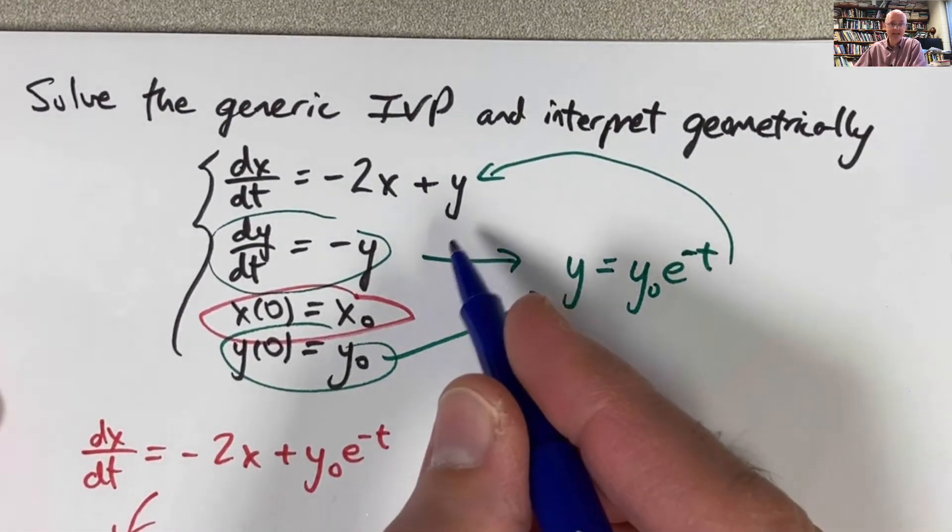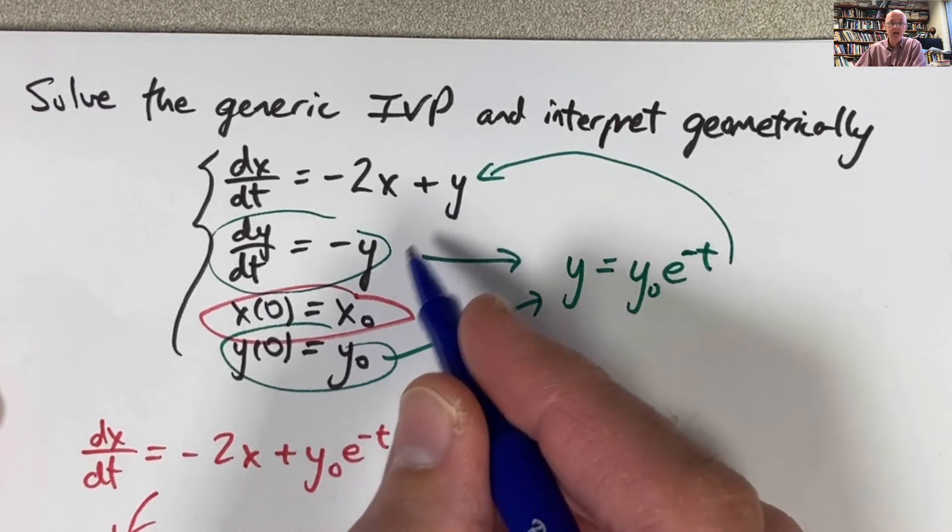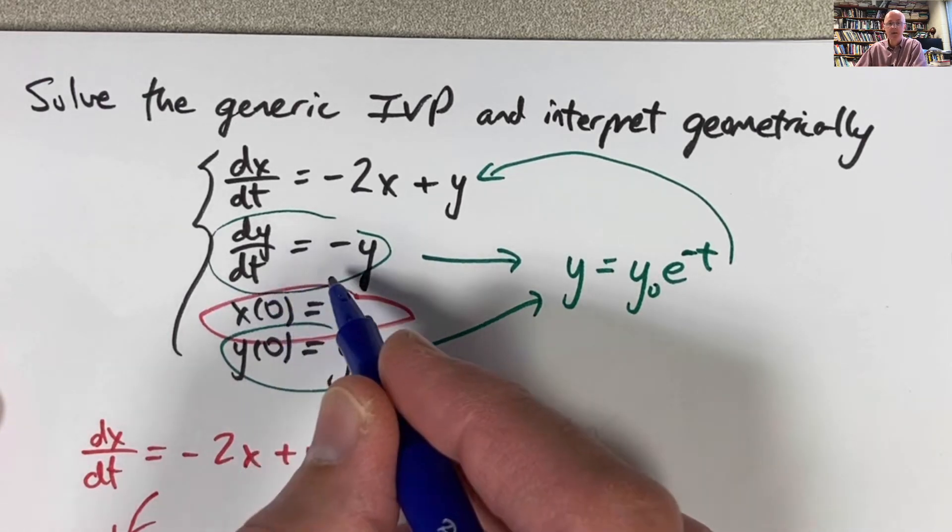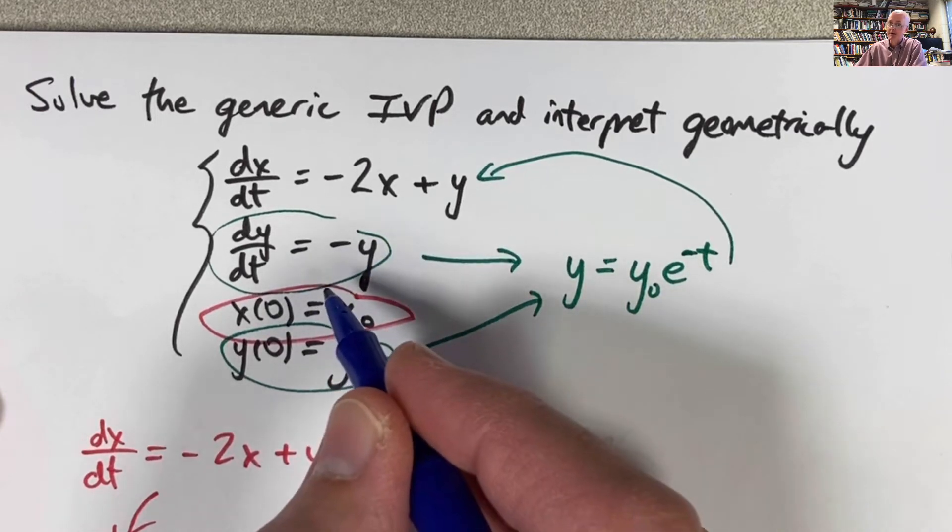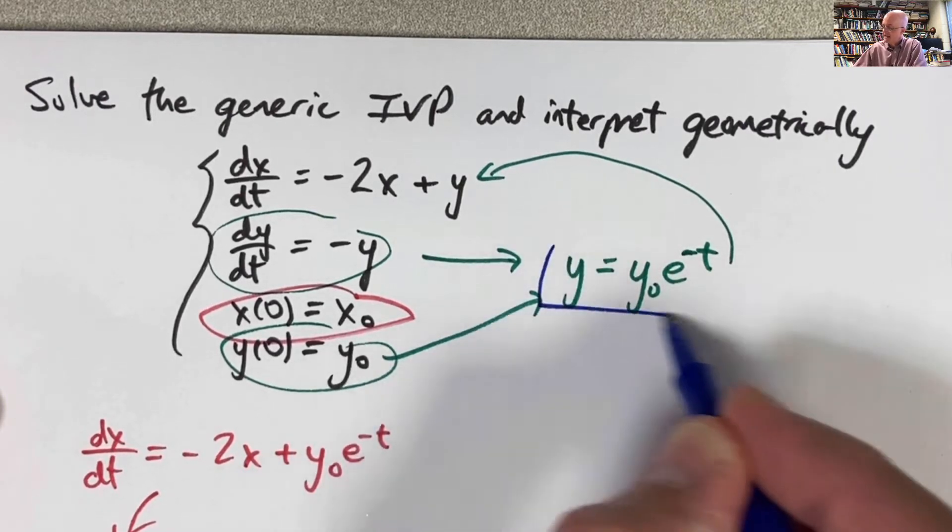So it is a system of partially decoupled linear equations. Linear because x and y appear to first power. Partially decoupled because the second differential equation, dy/dt equals negative y, does not involve the other variable x. It's decoupled from it. We can solve that equation very quickly, either by separating variables or by effectively guessing and checking.